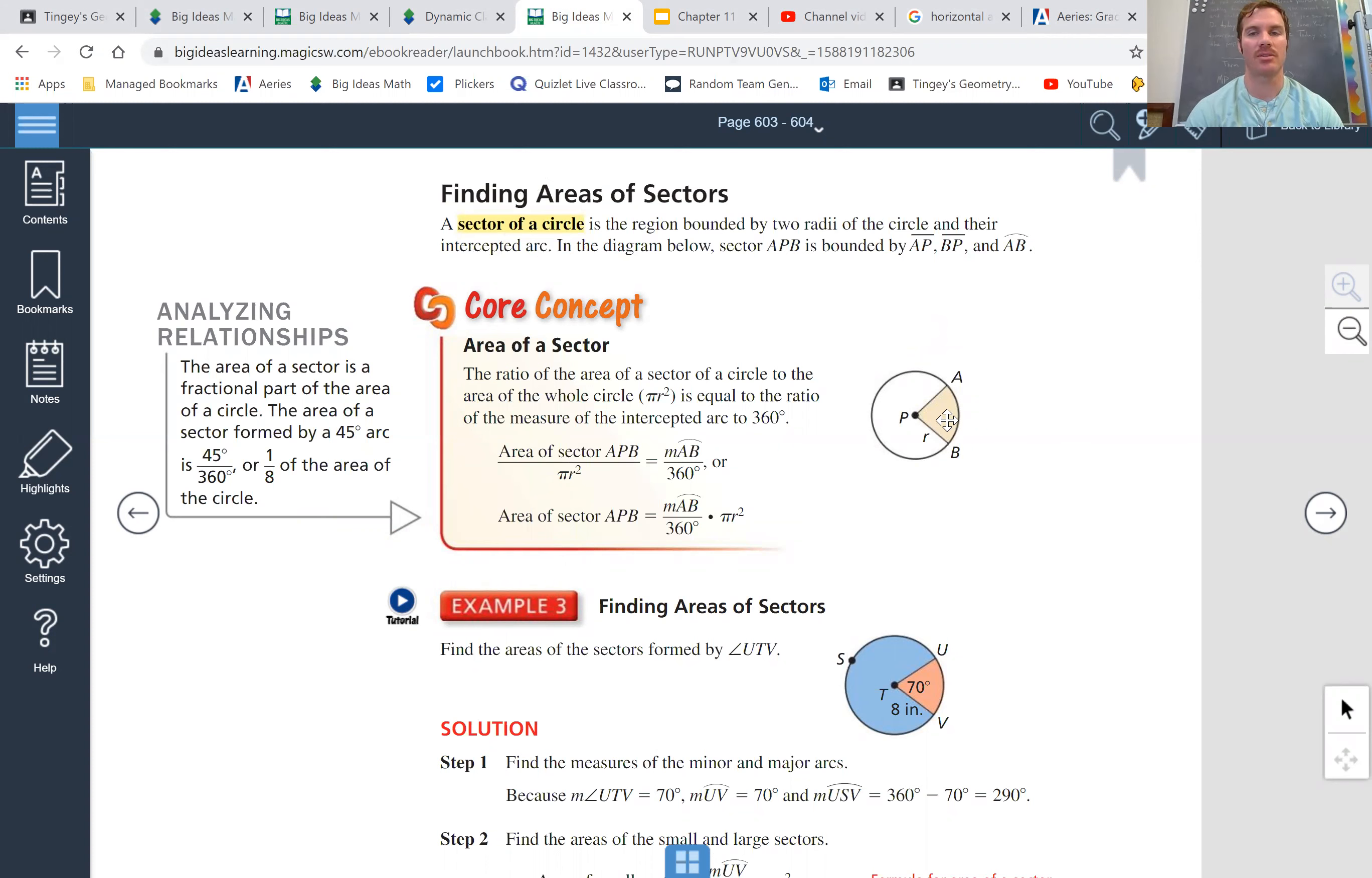Area of a sector, so it's like the shaded part. The ratio of the area of a sector of a circle to the area of the whole circle, pi r squared, is the whole area. So we're doing a ratio of this to the whole area is equal to the ratio of the measure of the intercepted arc to 360.